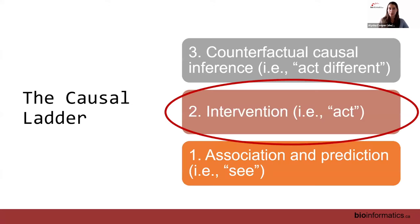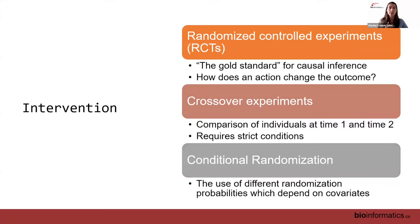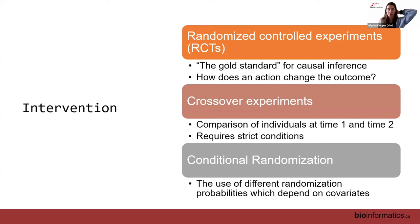The next step on the causal ladder is intervention — experimental designs. Randomized controlled trials (RCTs) are often the gold standard: we randomly assign individuals to treatment groups, and because we randomly sample from the population and randomly assign to groups, individuals are somewhat equal. Any differences in other variables tend to balance out through randomization, allowing us to conclude whether there's a causal relationship.